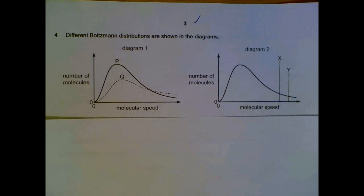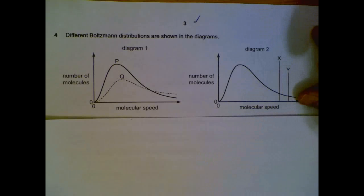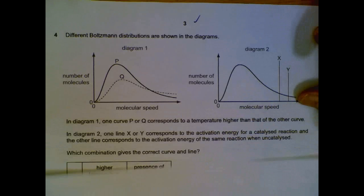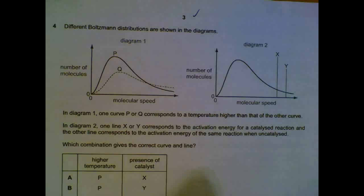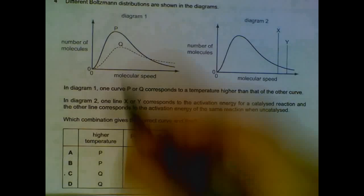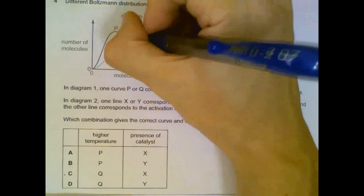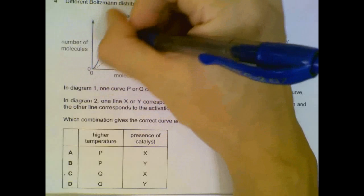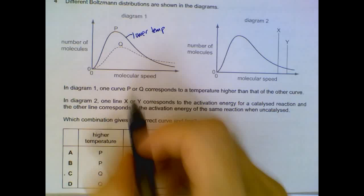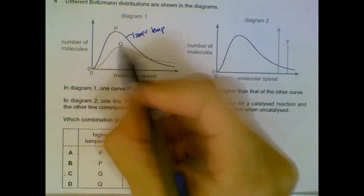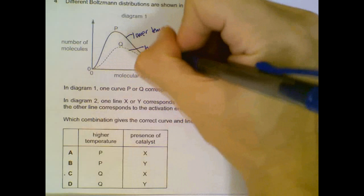The Boltzmann distribution shows the spread of energy and the proportion of particles. The question asks which curve shows the higher temperature. The curve with a higher peak and the peak more to the left represents the lower temperature. The one with a lower peak and the peak more to the right represents the higher temperature.